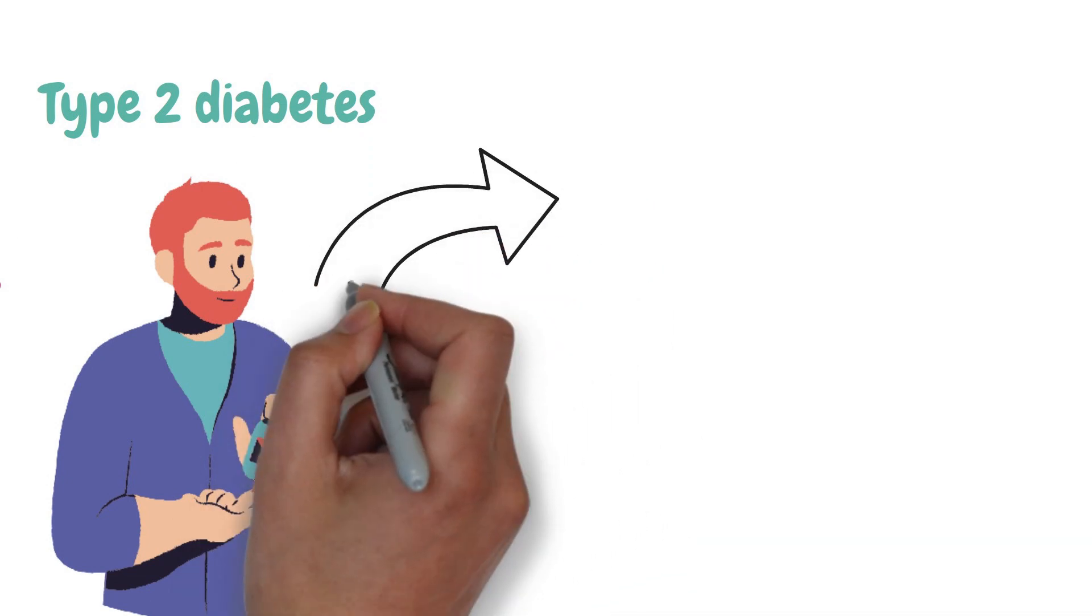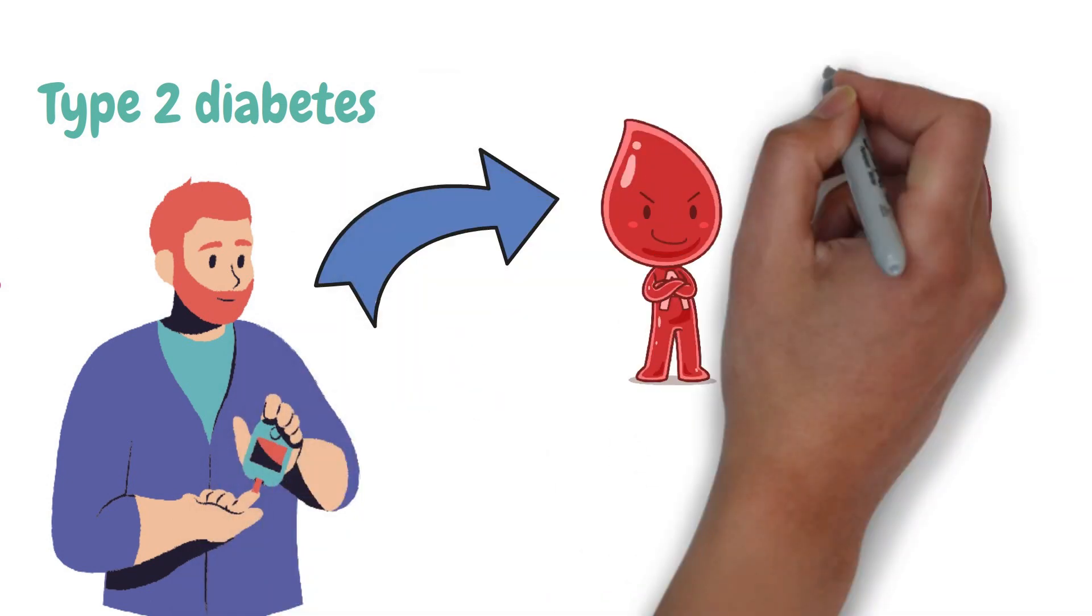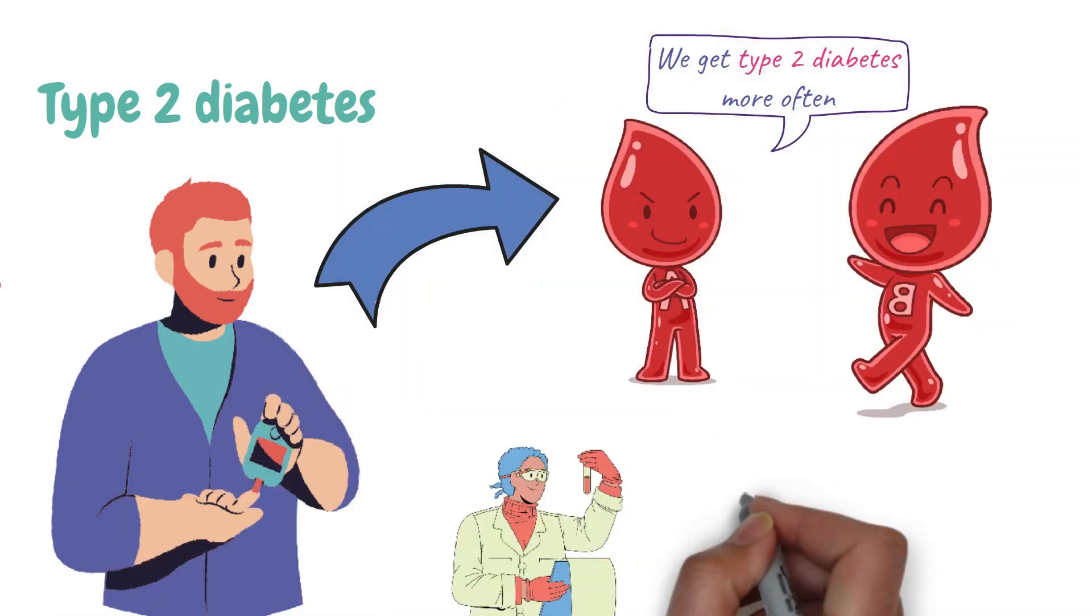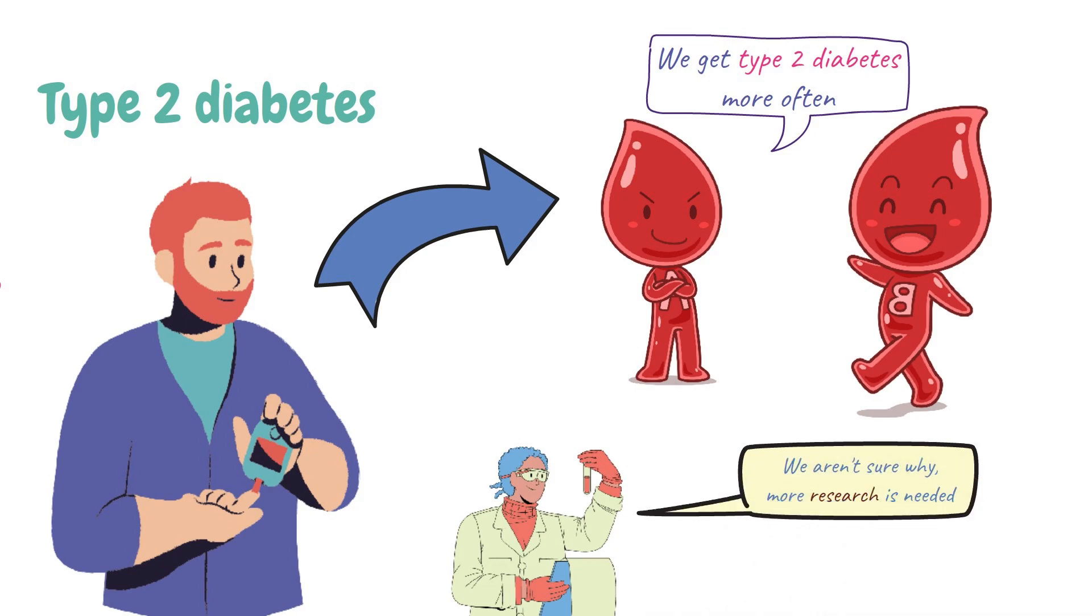Number eleven, diabetes. Type 2 diabetes seems to happen more often in people with blood types A and B. Experts aren't sure why. More research is needed.